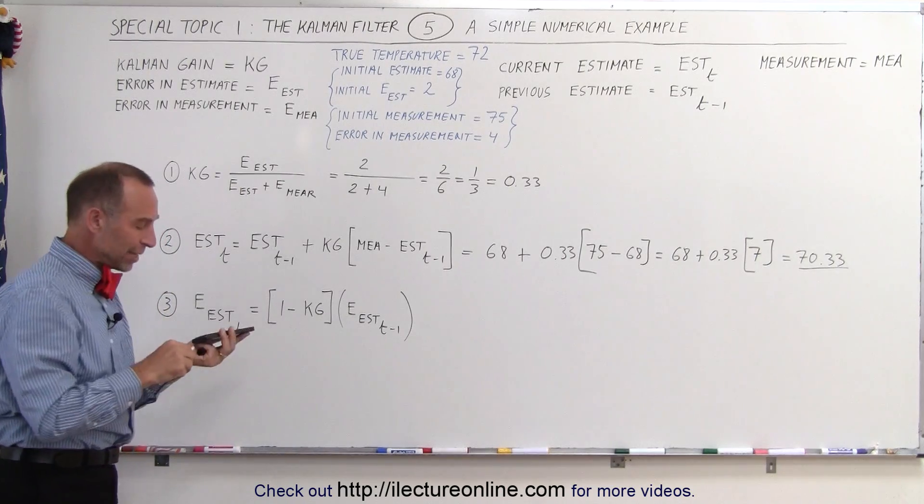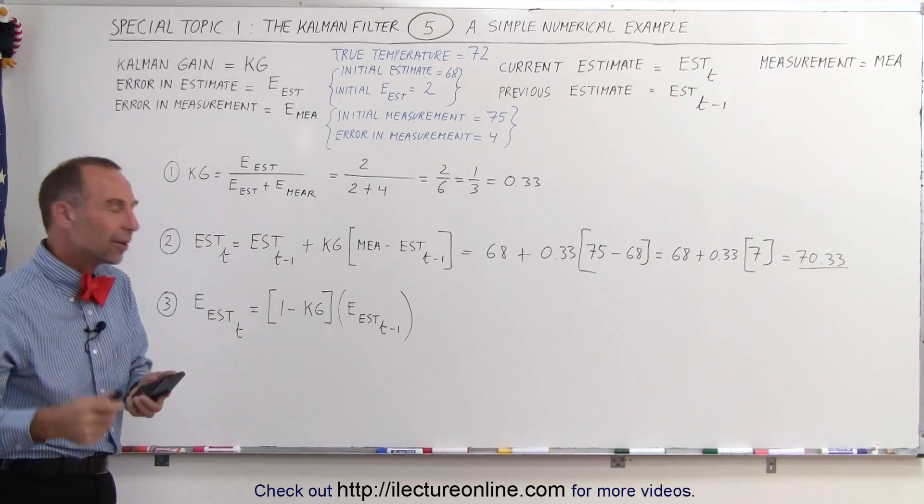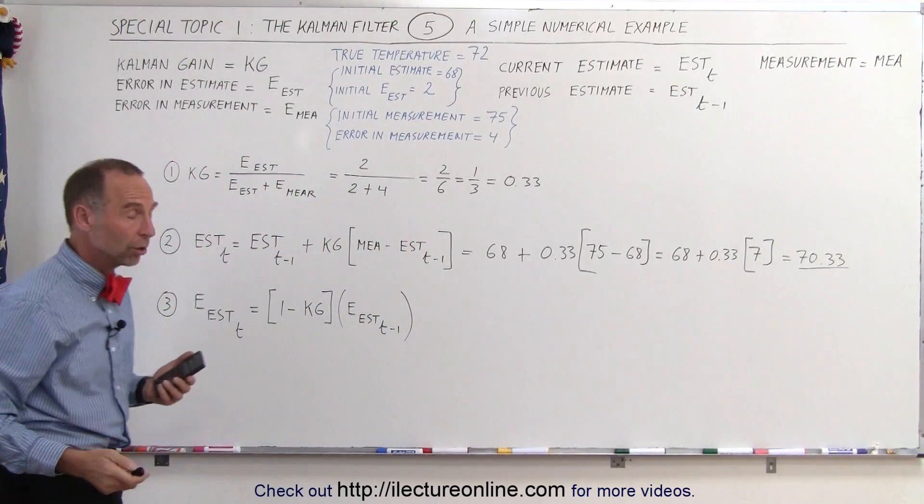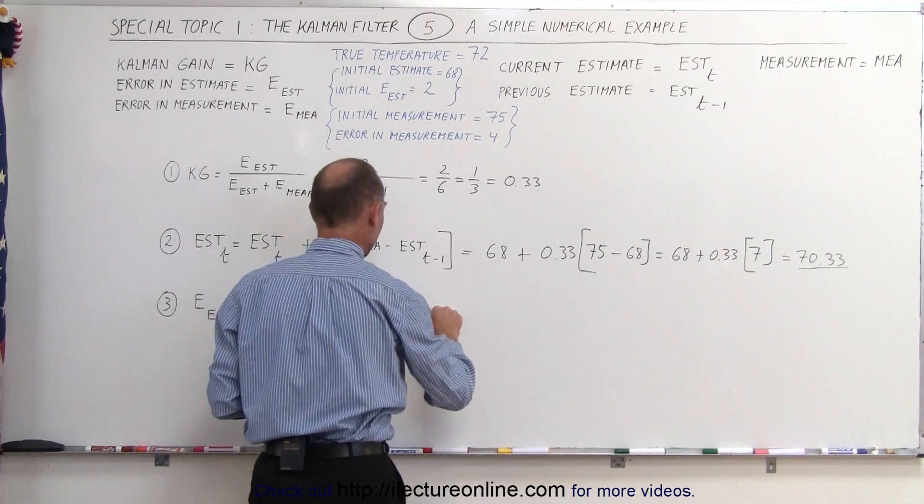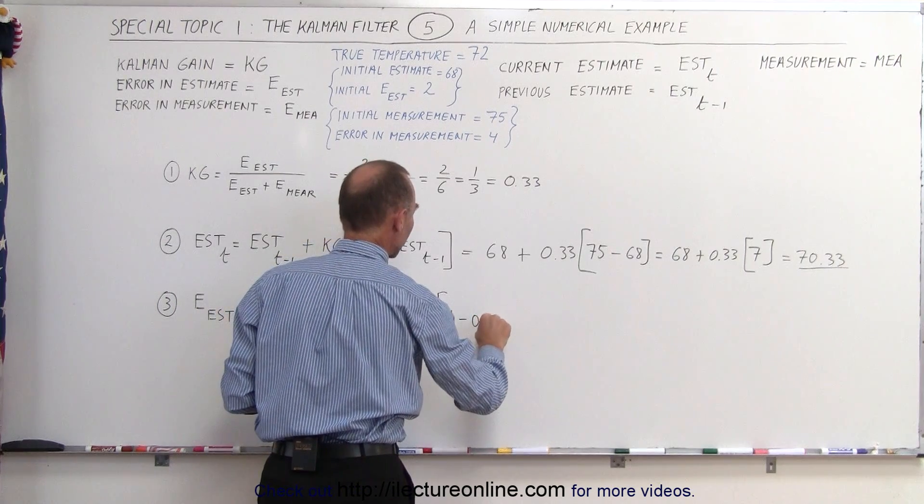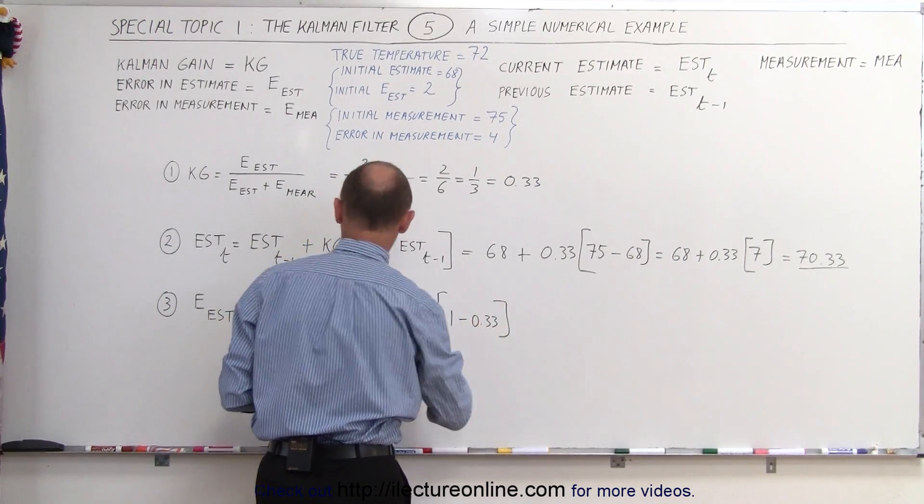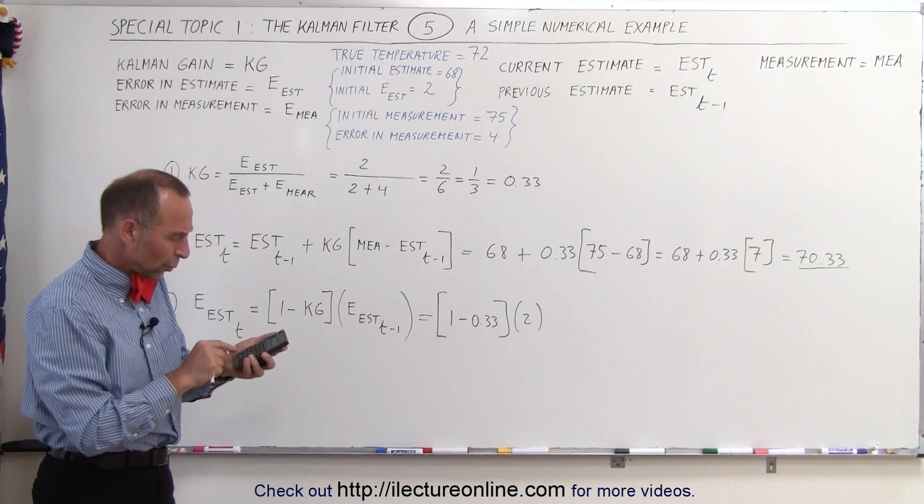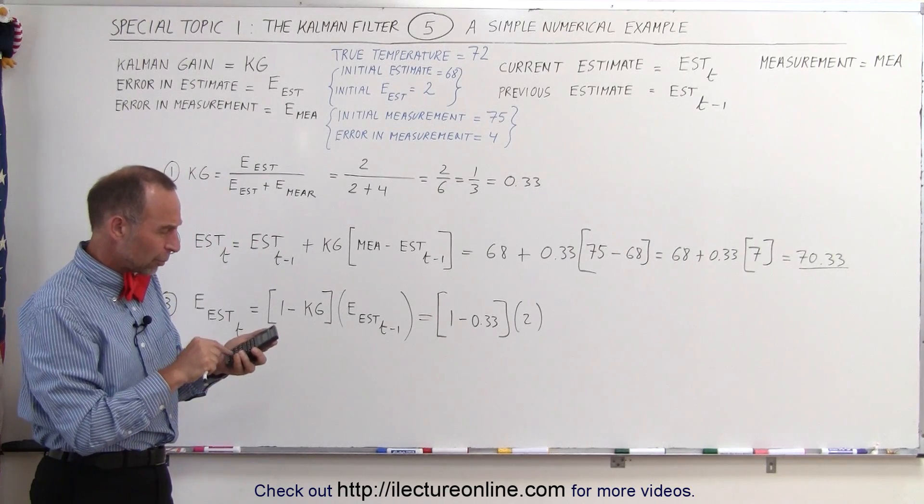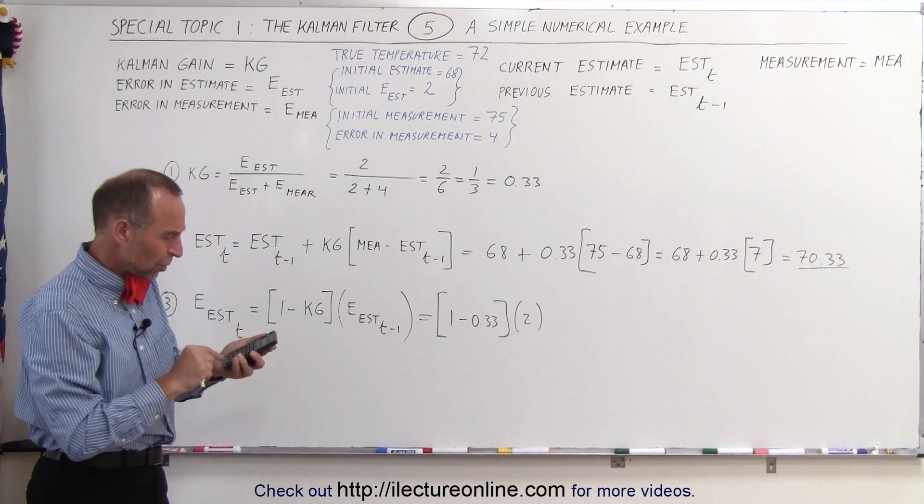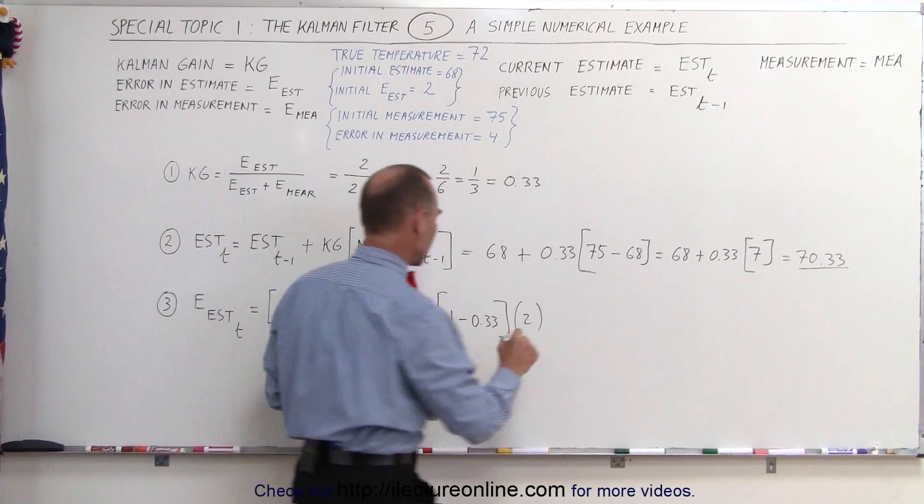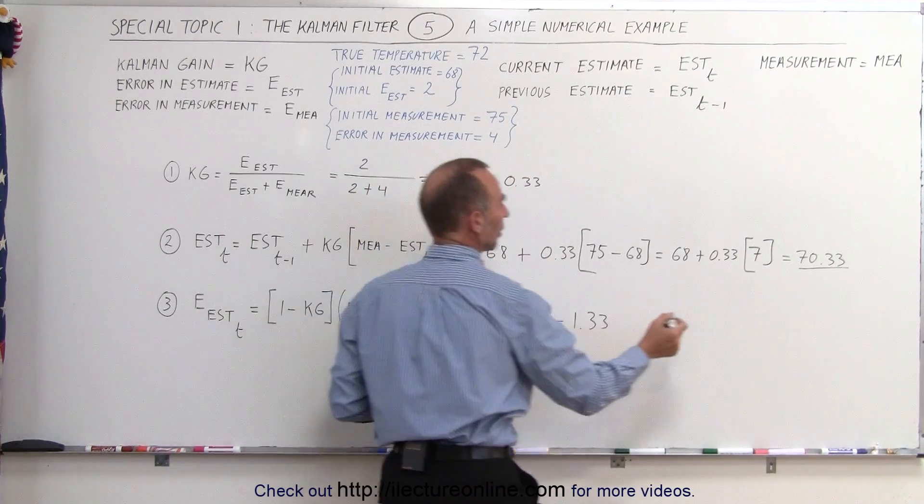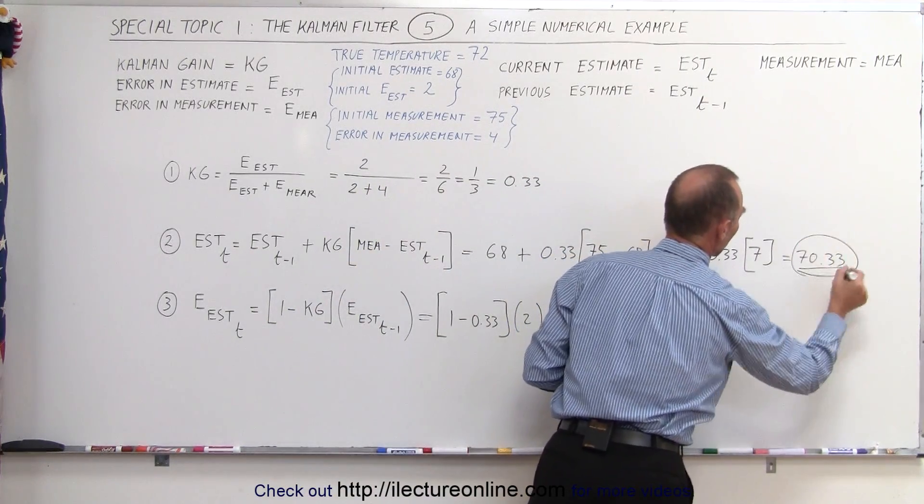The next thing we want to do is now recalculate or come up with a new error in the estimate. Remember that our previous error was 2, our new error is going to be smaller. So this is going to be 1 minus the Kalman gain, so in this case it's going to be 1 minus 0.33, multiplied times the previous estimate, which is 2. So remember that was one-third. That'll give us 1 minus 0.3333 equals multiplied times 2, and we get 1.33. So the new error in the estimate is 1.33.